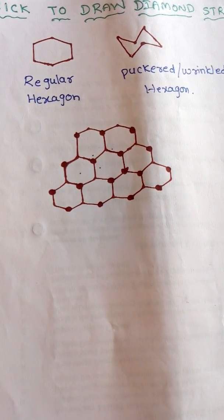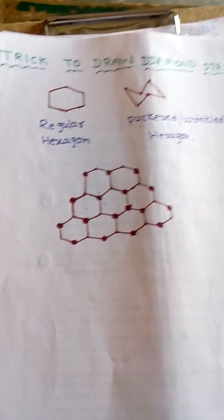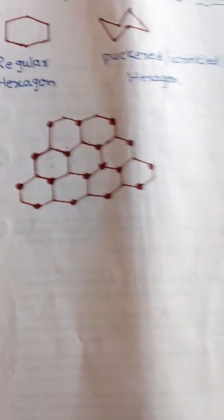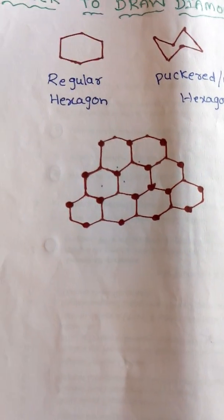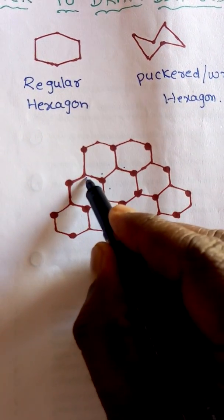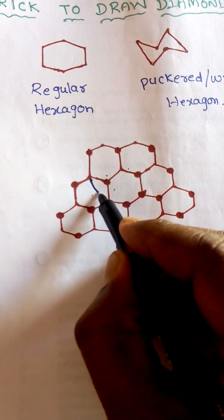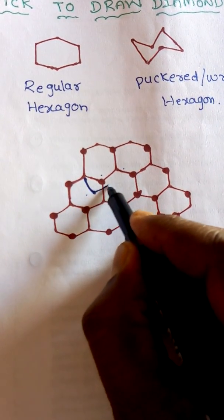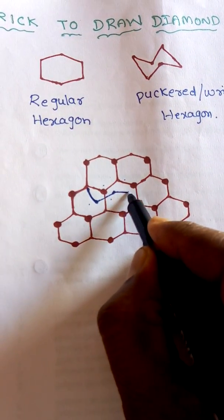Then after, we have to write the puckered hexagon by using other curves. So we do that one. We start from here like this.